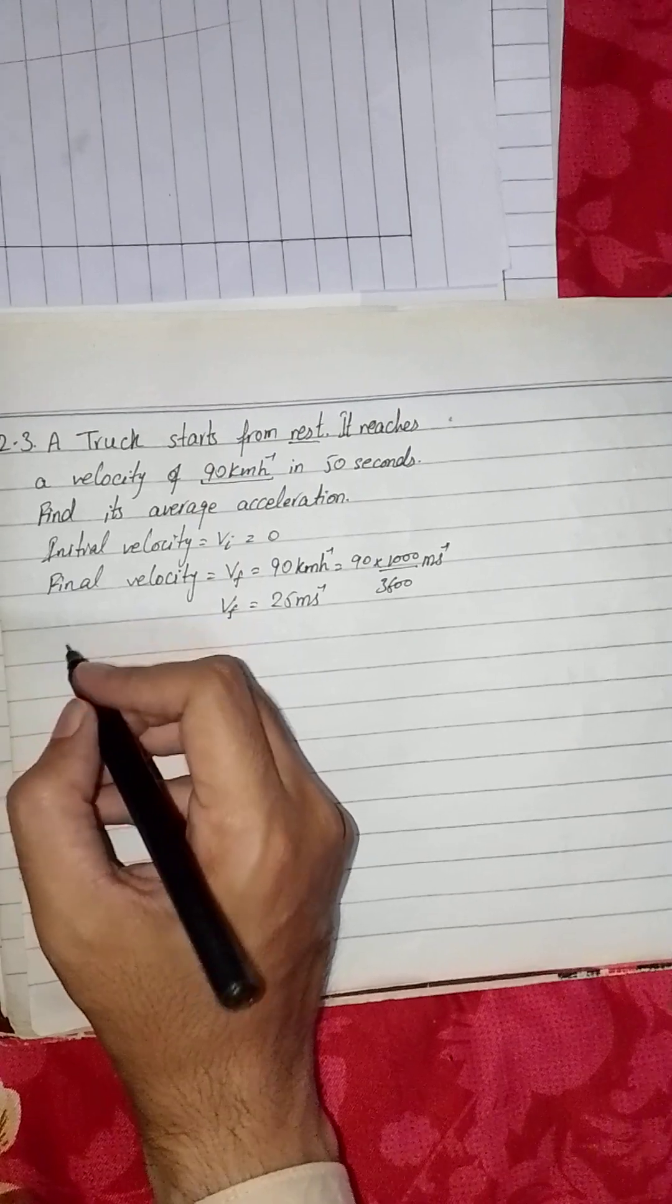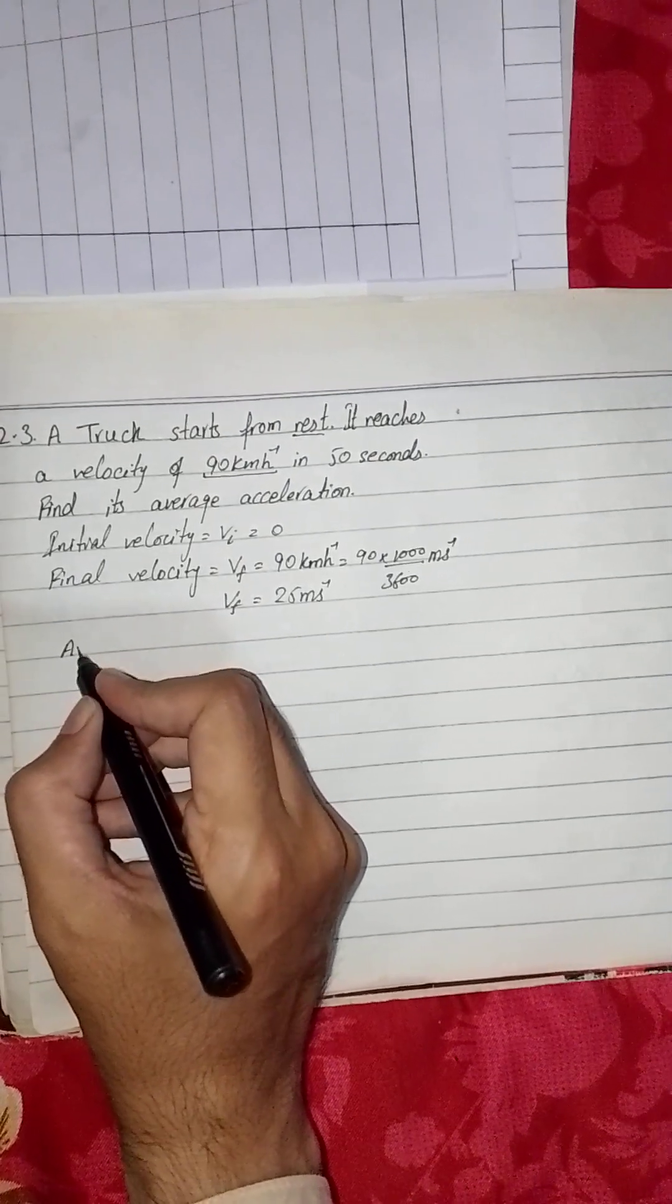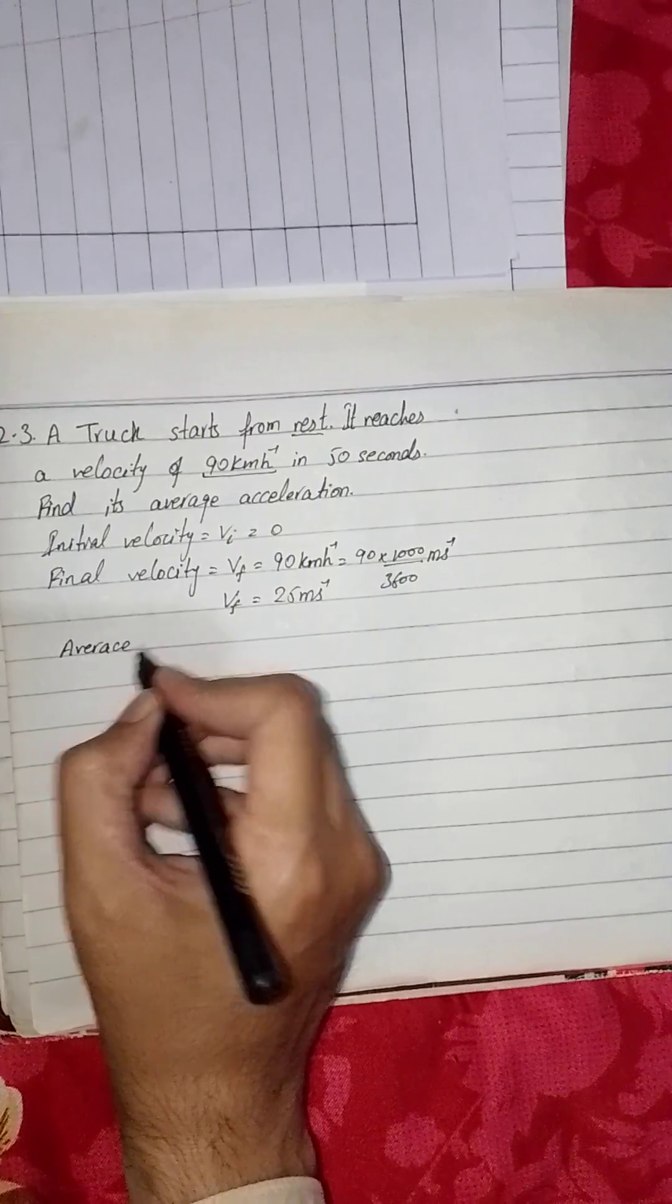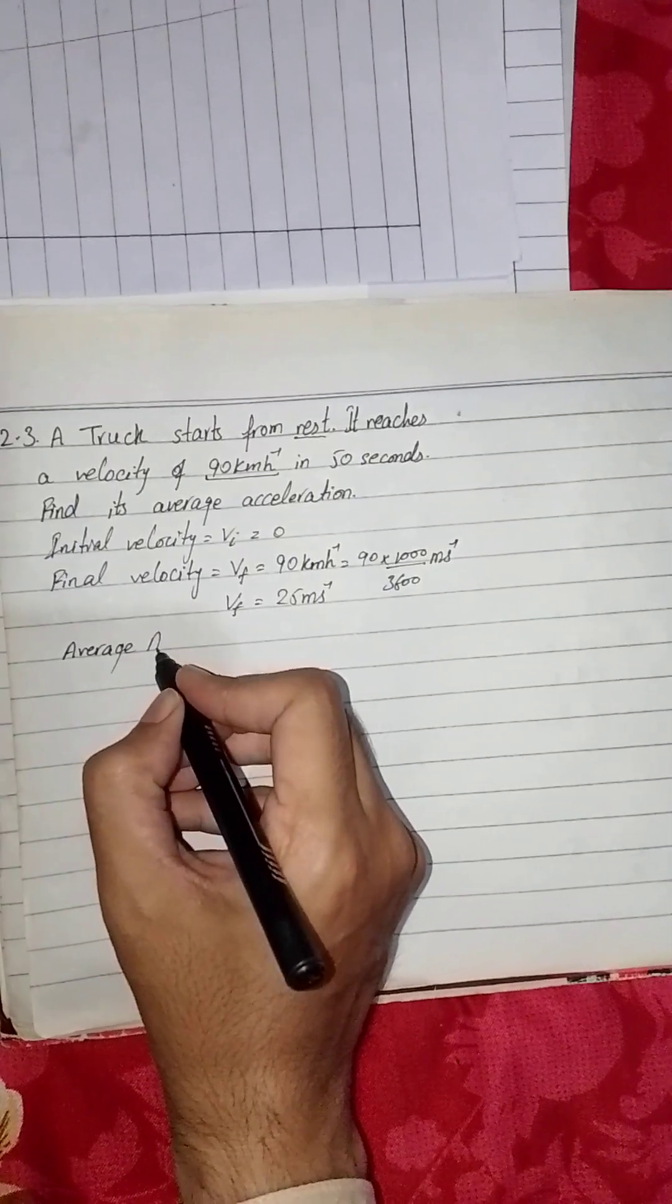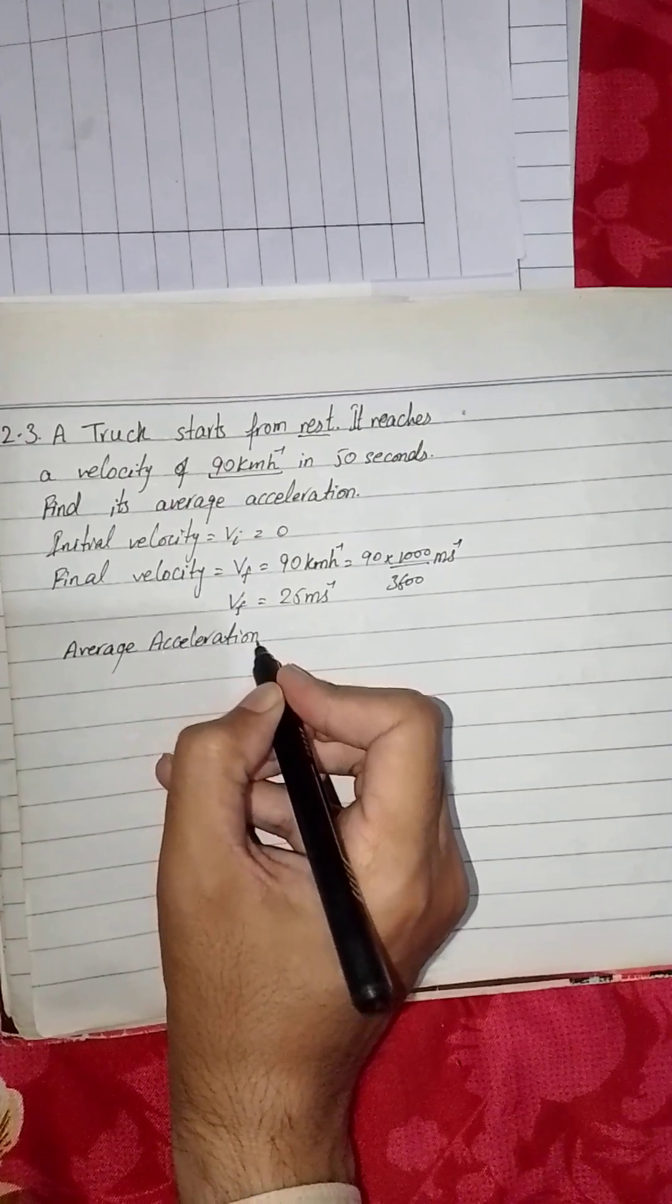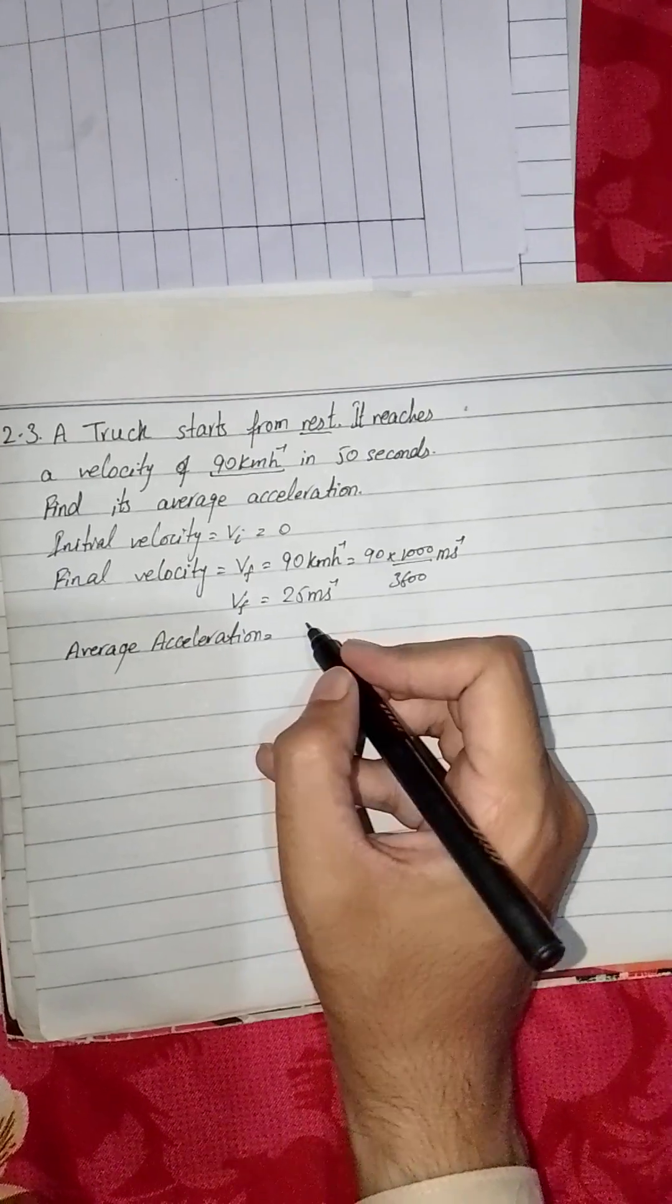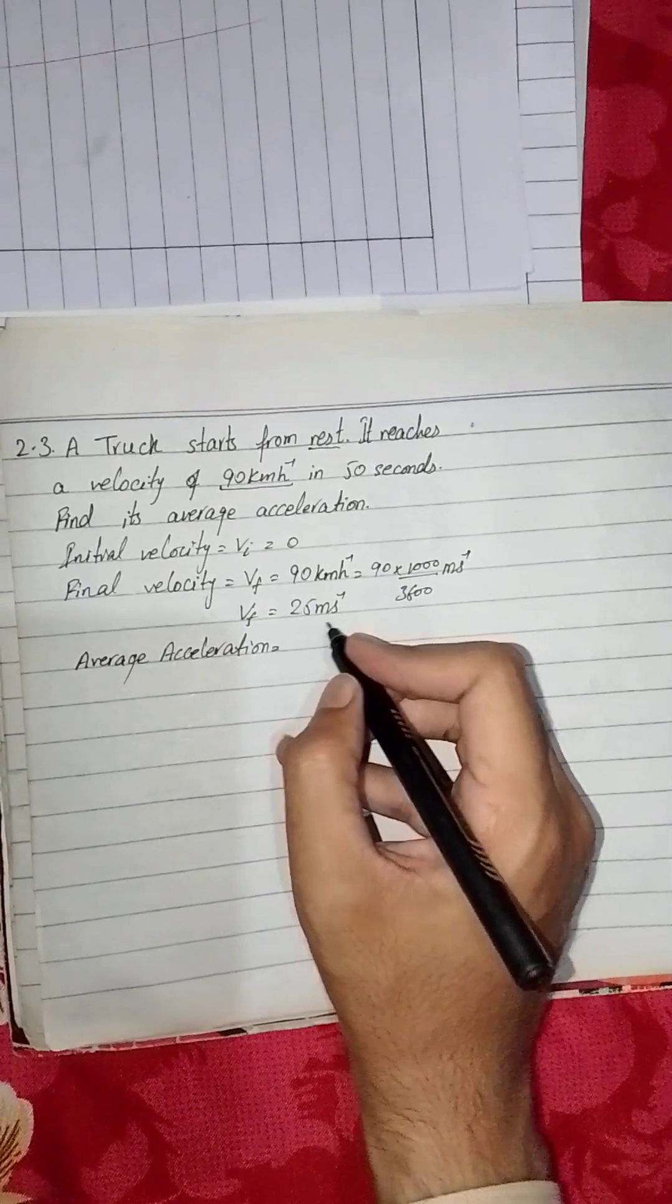Now as we know, the average acceleration is given by change of velocity divided by time, or we can say rate of change of velocity.